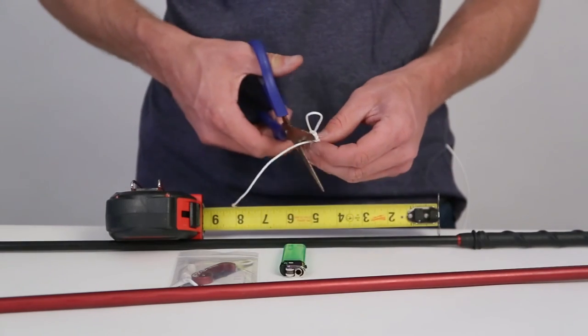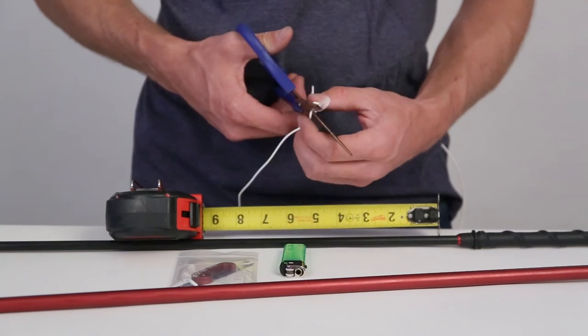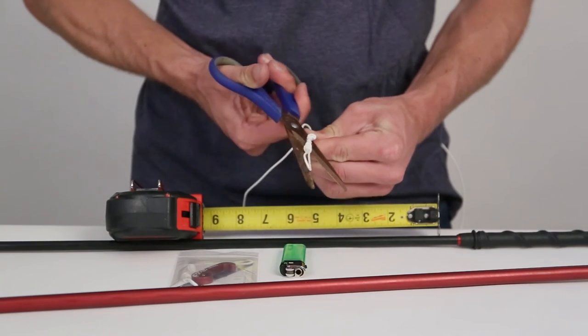Trim the excess dyneema and use a lighter to singe the ends.